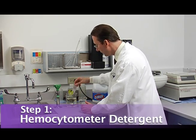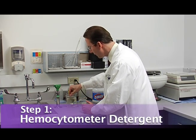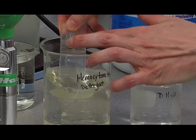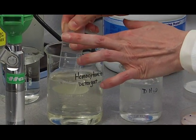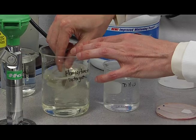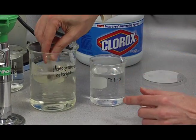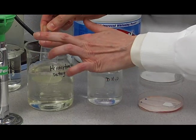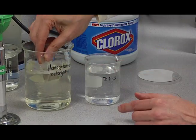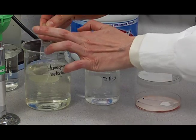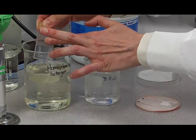So the first step is to swish it in the detergent like this, and then you can scrub it with your finger like this. And I do that three or four times, actually. The more time you spend cleaning your hemocytometer, the better. If it's not perfectly clean, it'll really throw off your counts.